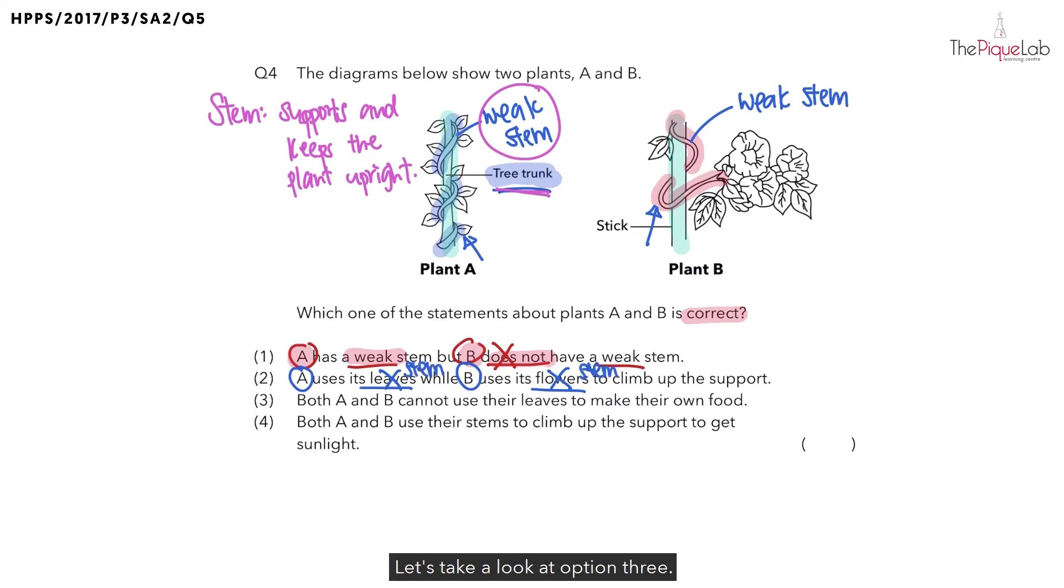Let's take a look at option 3. Both plant A and B cannot use their leaves to make food. Remember we mentioned earlier why the plants with weak stems want to climb around the tree trunk or other objects? It is because they want to be able to trap maximum amount of sunlight to make food. So can we say that the plants cannot use their leaves to make food? No. Because the purpose of them climbing up the tree trunk or the stick in the first place is to make enough food.